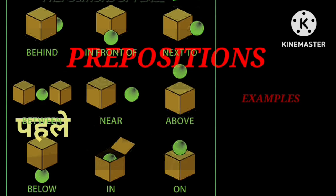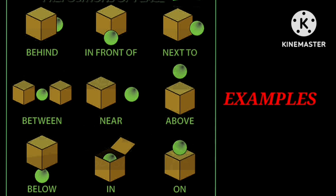Aap hum kuch examples dekhtay hai. Ye kuch examples hai. Isme hum ball ki position bata rhe hai. Ball kya hai? Ek thing hai — it is a noun. Ball ki hum position bata rhe hai ki ball kahan hai. Agar ham box dekhae, toh box ke pichay hai. Pichay ko kya hum boltay hai? Behind. Next is 'in front of' — means, koi cheez saamne hoti hai, toh hum usko boltay hai 'in front of'.